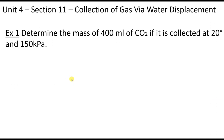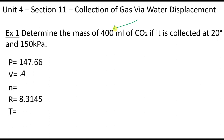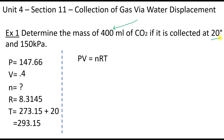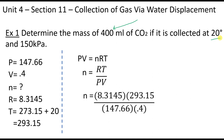Now we can proceed to the Ideal Gas Law, PV = nRT. We use our adjusted pressure of 147.66, volume of 0.4 liters, gas constant R = 8.3145, and temperature of 273 + 20 = 293.15 K. Rearranging for n and substituting in the values, we get n = 41.267 moles.